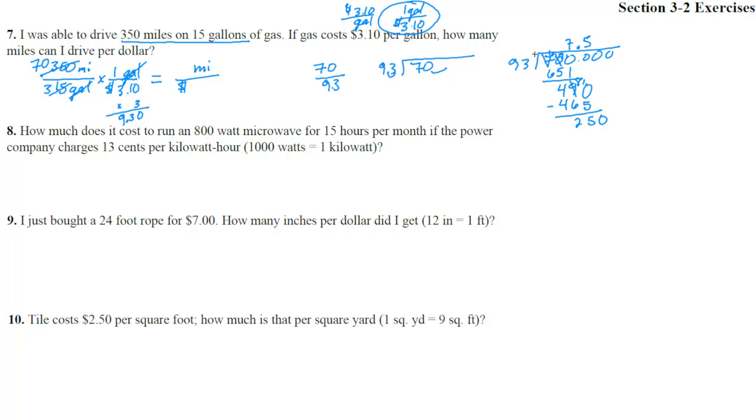Drop the 0 down here. 9 goes into 25, 2 times. Not quite 3. 2 times 3 is 6, 2 times 9 is 18. Subtract those. We have 4 and 10: 10 minus 6 is 4, 14 minus 8 is 6.